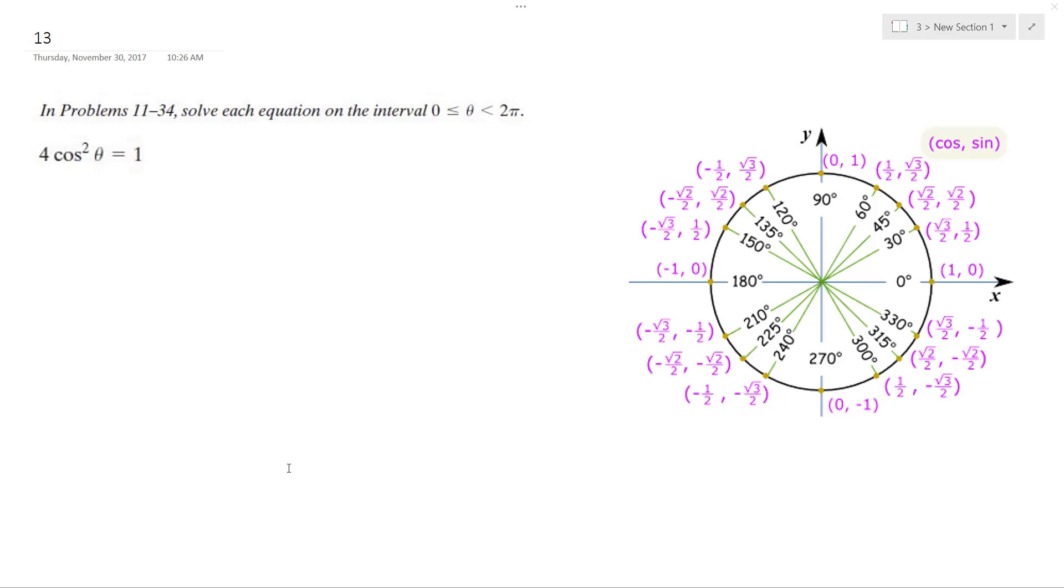Alright, solving this problem. First thing I'm going to do is divide 3 by 4. We want to get cosine by itself. So I get cosine squared theta is equal to 1 over 4.